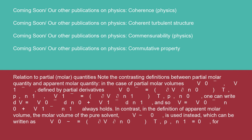Relation to partial molar quantities: note the contrasting definitions between partial molar quantity and apparent molar quantity. In the case of partial molar volumes V̄₀, V̄₁, defined by partial derivatives V̄₀ = (∂V/∂N₀)_{T,P,N₁} and V̄₁ = (∂V/∂N₁)_{T,P,N₀}, one can write dV = V̄₀·dN₀ + V̄₁·dN₁, and so V = V̄₀N₀ + V̄₁N₁ always holds.